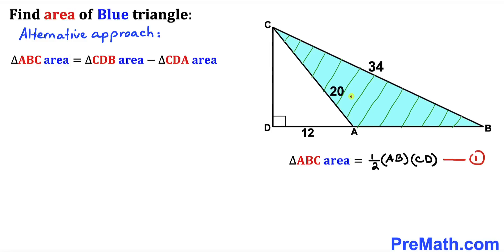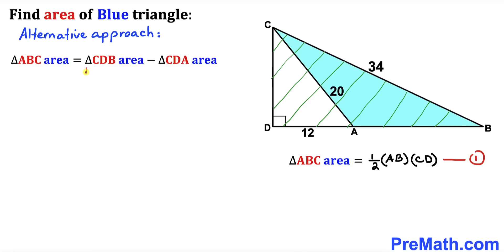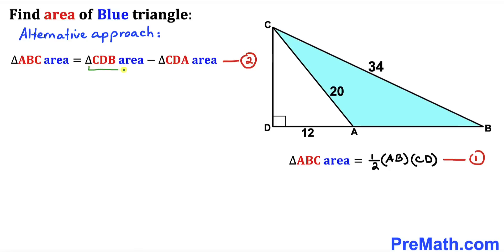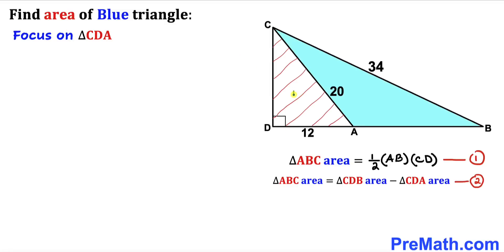Here's our alternative approach. The area of triangle ABC equals the area of the bigger triangle CDB minus the area of the smaller triangle CDA. Let me call this Equation 2. We are going to calculate the area of triangle CDB and the area of triangle CDA in order to find the area of triangle ABC. Now let's focus on right triangle CDA, whose side lengths are 12 and 20.